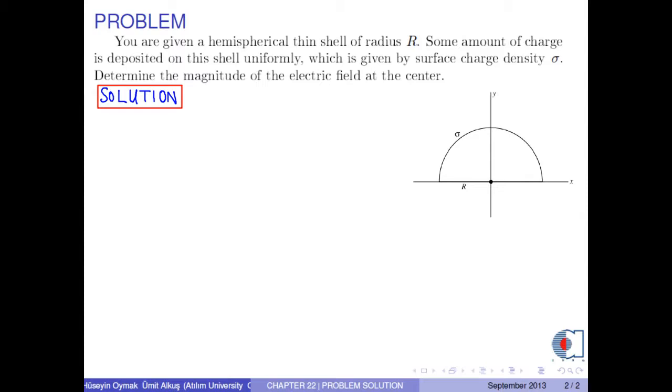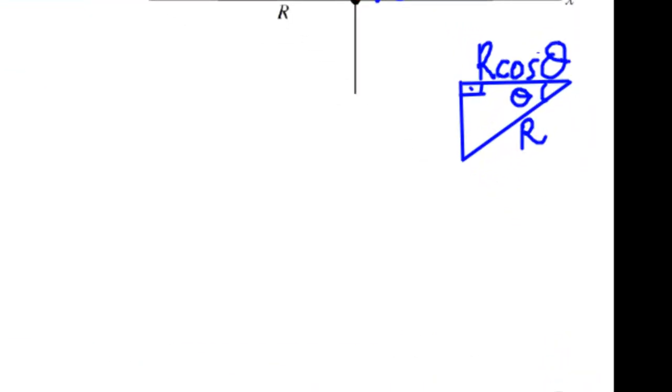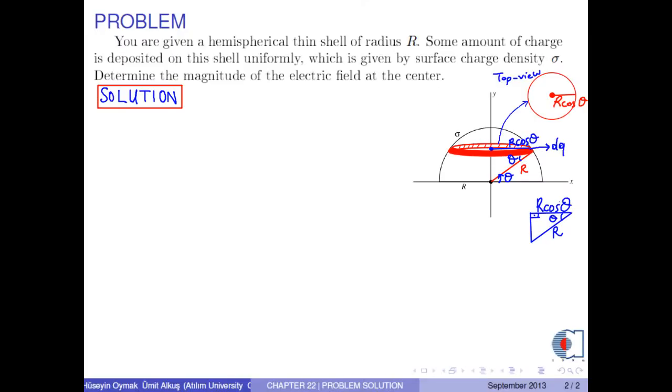Let's take an infinitesimal thin shell at an angle theta, which is measured from positive x-axis. Then its radius becomes R times cosine theta because of the particular geometry, and let the charge of this infinitesimal thin shell be dq.